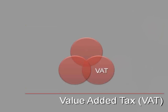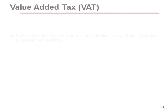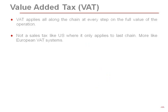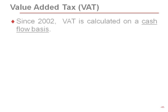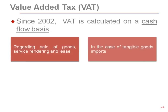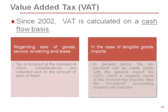Now, value-added tax. VAT applies all along the chain at every step on the full value of the operation — it's not like a U.S. sales tax that only applies to the end seller. It's more like European value-added tax systems. Since 2002, VAT is calculated on a cash flow basis. So your income tax is accrual-based, your books are accrual-based, but both flat tax and VAT are cash flow-based — which makes calculating taxes in Mexico more complicated.